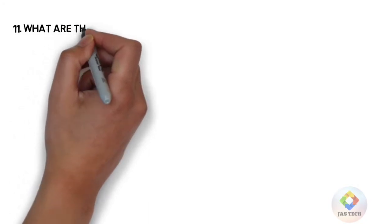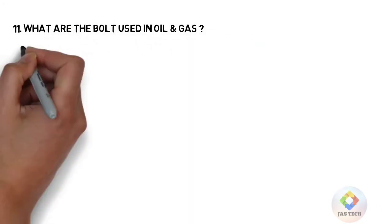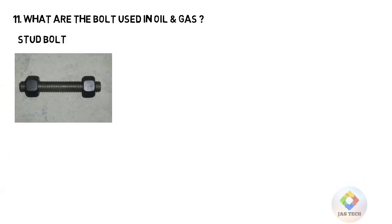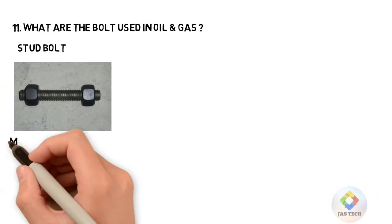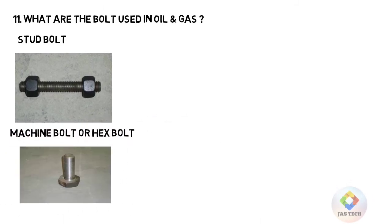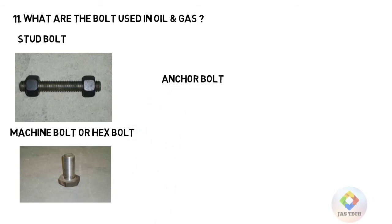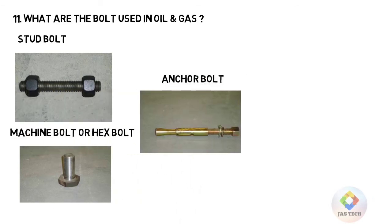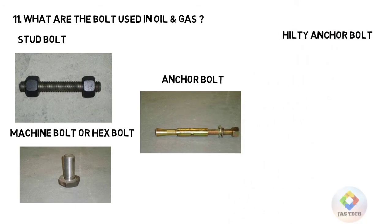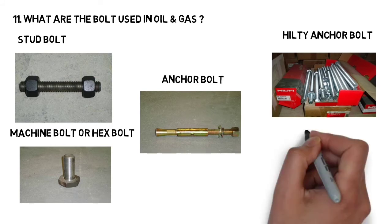Q11: What types of bolts are used in oil and gas? 1. Stud bolt. 2. Machine bolt or hexagonal bolt. 3. Anchor bolt. 4. Hilti anchor bolt.